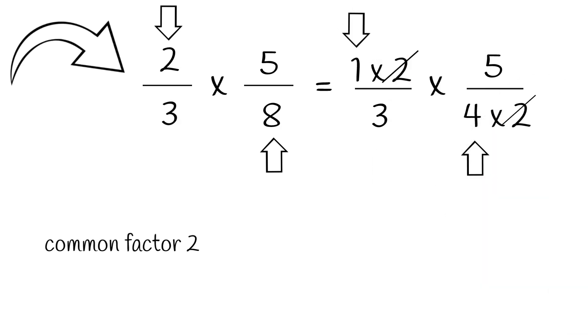Once we've already crossed out the common factors, we can now multiply our top numbers. 1 times 5 equals 5. Then, our bottom numbers, 3 times 4 equals 12. And that's our answer. 2 over 3 times 5 over 8 equals 5 over 12.